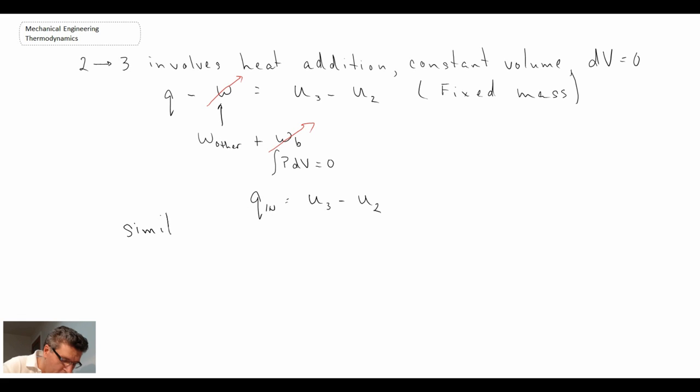And similarly, we can write for Q out. So that is the heat rejection process. It is equal to the change in internal energy between state 4 and 1.